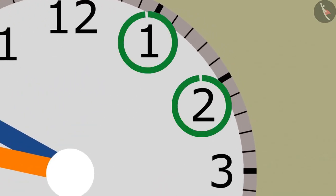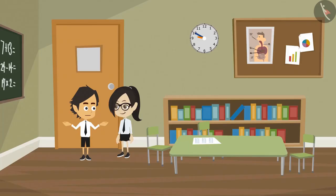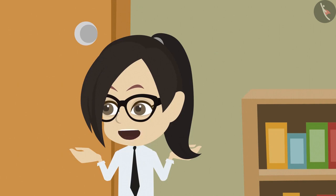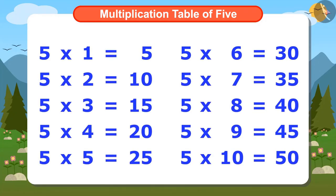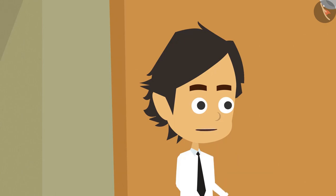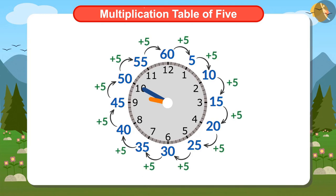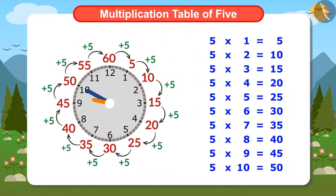Look at the numbers on the clock. The small markings in between them tell the minutes. These have to be counted to find out the minutes. Hey Vandana, you don't need to count! Then how will we find out how many minutes have passed? I use the multiplication table of 5. See, the difference between all these numbers is 5, and the difference between numbers in the multiplication table of 5 is also 5.